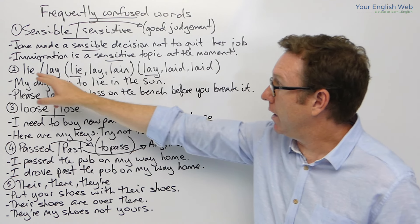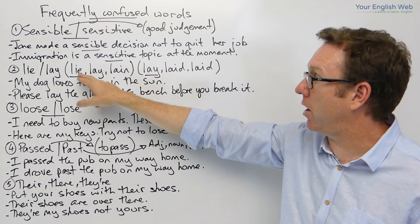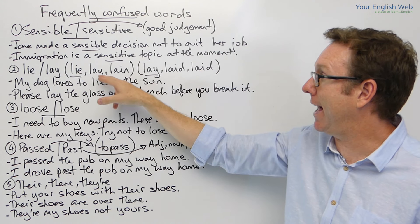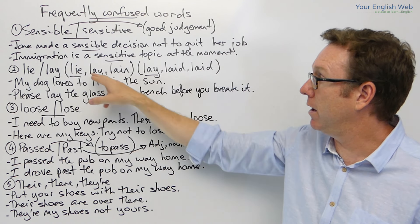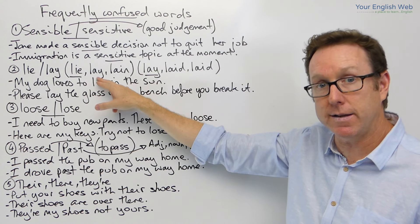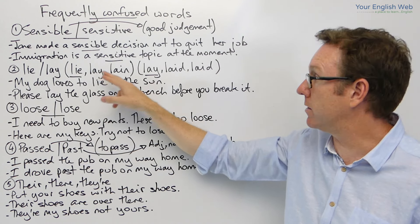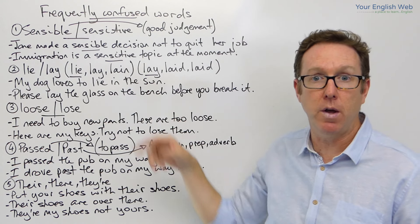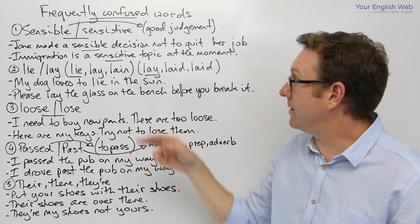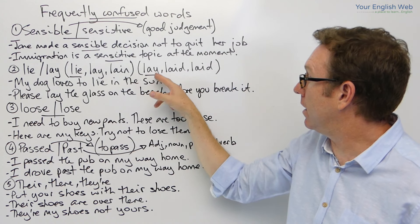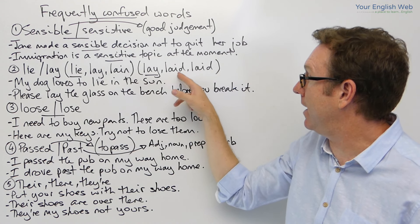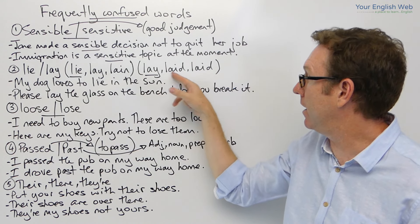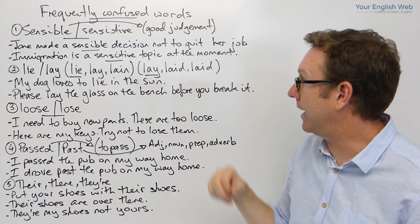Now, lie has the structure of lie, lay, lain. So, lie — lay is the past tense, and lain is the participle. And lay is lay, laid, laid.